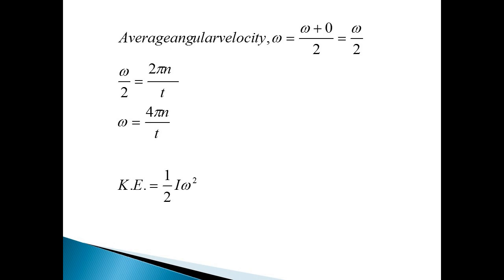Where n is the number of rotations made after the mass is detached, and t is the time taken for n such rotations. Using the angular velocity omega, we can find out the kinetic energy. Kinetic energy is equal to half I omega square.